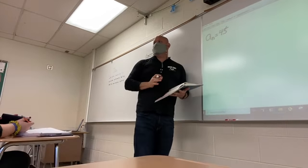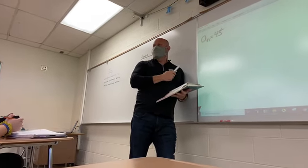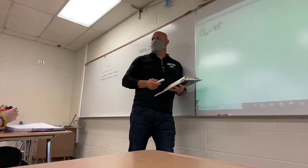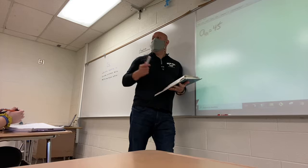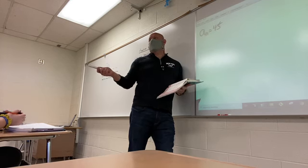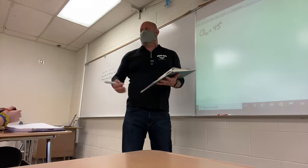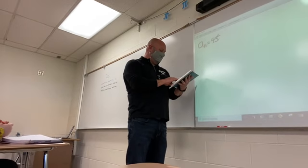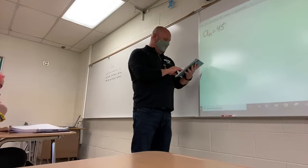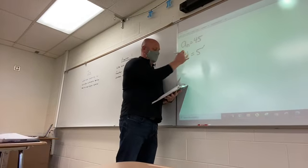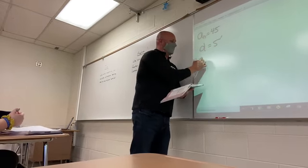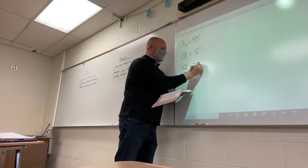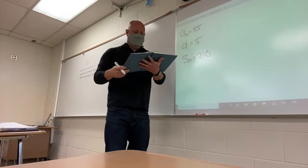All right, so 42, they give us A sub N is 45. The first thing I want you guys to understand is, what does that mean? What does A sub N equals 45 mean to us? One of the terms. Probably the last term, right? Okay, we just don't know, is it the 7th term or is it the 480th term? Who knows? But one of the terms in the sequence is 45. Okay? And then they give us the D value is 5. And then they also say S sub N is 210. Right?